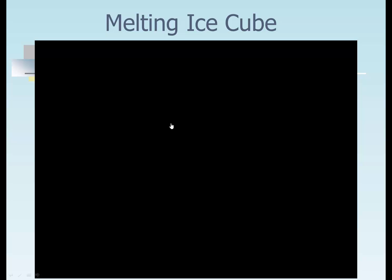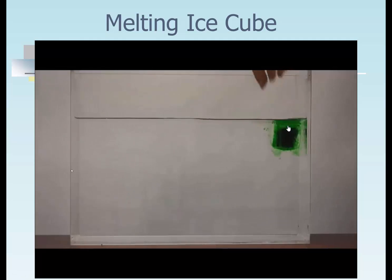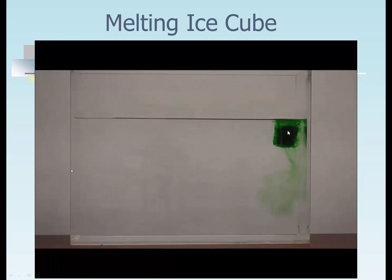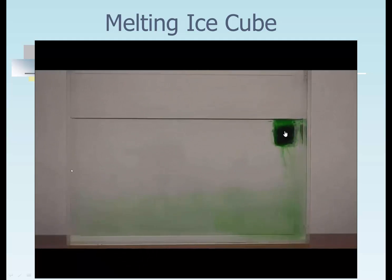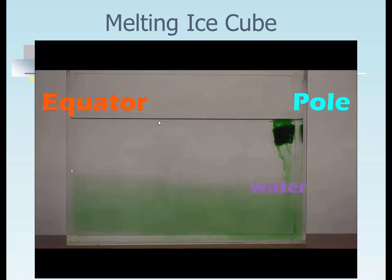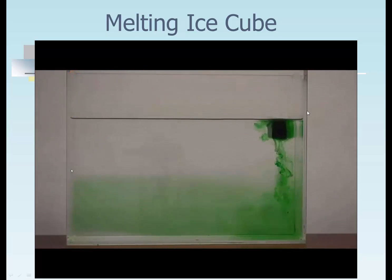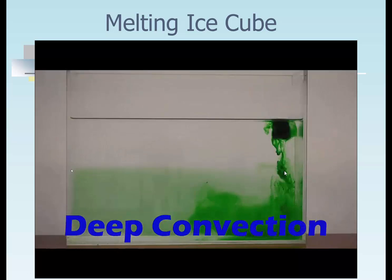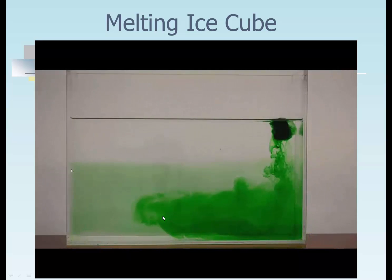This is an embedded video — an ice cube that has green food coloring in it. You can see as the water froze, the green pigment got concentrated into the center, and then finally froze. You can see it's melting in a container — surface tension causes the water to go up, but the cold water sinks, moves down towards the bottom, and that's deep convection.